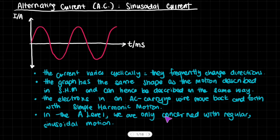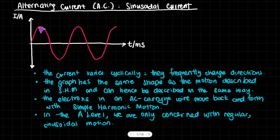However, at the A-level we are only concerned with regular sinusoidal motion. The current has a variation that's cyclical — it frequently changes direction following this type of motion, where it increases, slowly decreases, changes direction, increases in magnitude, decreases in magnitude, and keeps going.